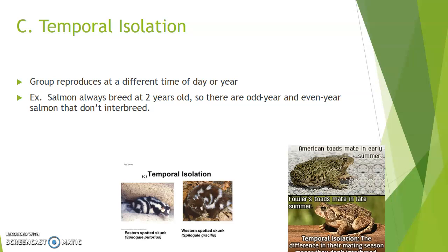The third type is temporal isolation — temporal meaning relating to time. This means they're just not making babies at the same time: the same time of year, day, or month. If they're not in season at the same time, they won't reproduce together. Salmon are a strange example: they have a two-year lifespan, born in rivers, going out to the ocean, growing up big and strong, then returning to the river to spawn and die. Even-year salmon are born in even years, spend the odd year in the ocean, and return in the even year. The even-year and odd-year groups don't mix because they're separated by time, and if they eventually lose the ability to interbreed, they could be considered two separate species.